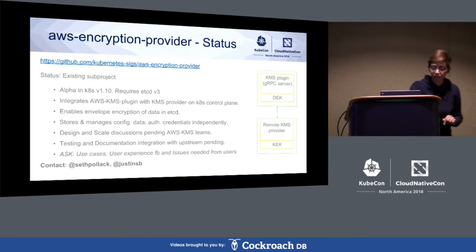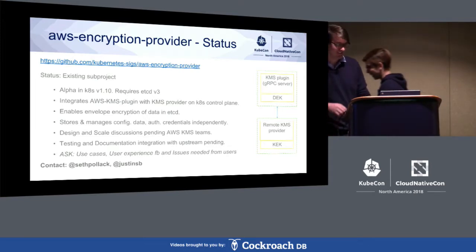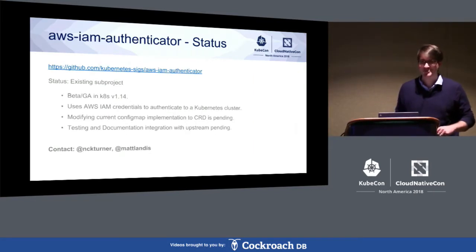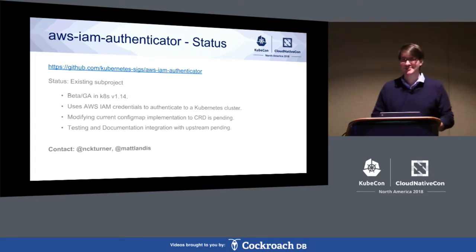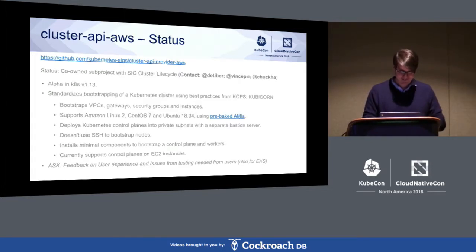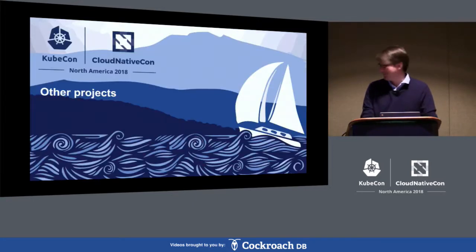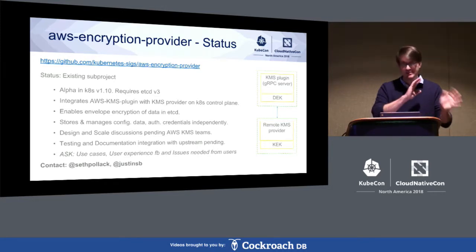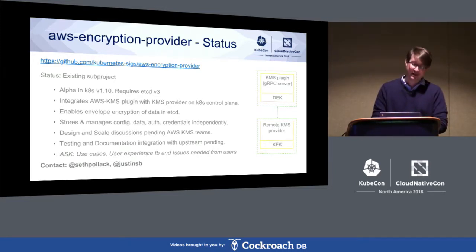Thank you, Nishi - that's a great update. I'm thinking back to all the previous SIG updates I've given where I've probably glossed over a lot of these things. I'll cover some of the last couple of projects. The first one is the AWS encryption provider - a subproject that's been around for a while. It went alpha in Kubernetes 1.10. It requires etcd and notably API server changes, so this is something you'll likely need to get baked into your upstream tool, whether it's KOPS, EKS, or any other tool.